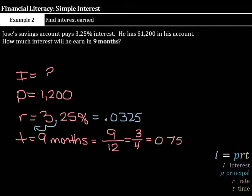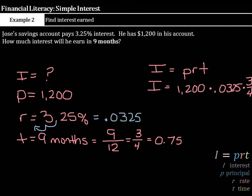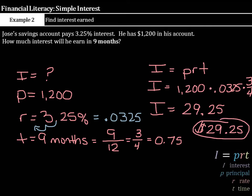Well, now I have everything I need. So we'll start with I equals PRT, the interest we're solving for. The principal is $1,200. Our rate is .0325. And our time, three-fourths, or nine twelfths, or 0.75. You can use any of those three. When you multiply these numbers together, I equals 29.25 or $29.25 is the interest he has earned.